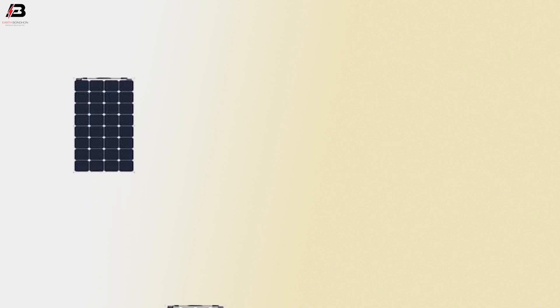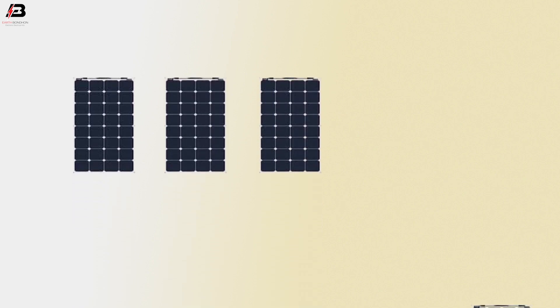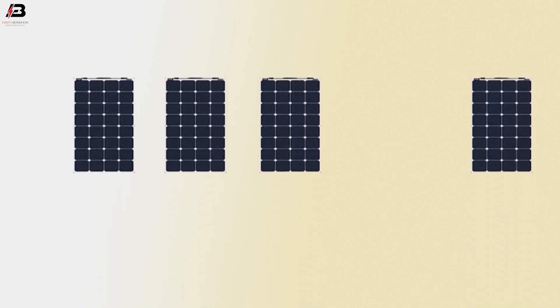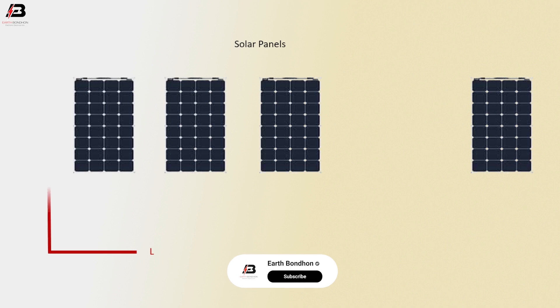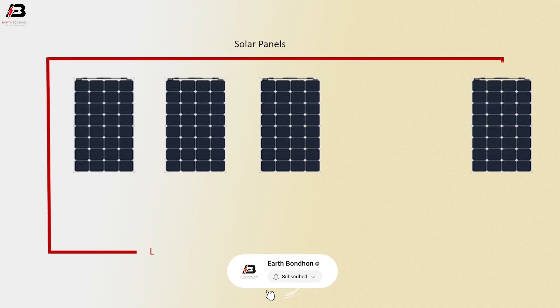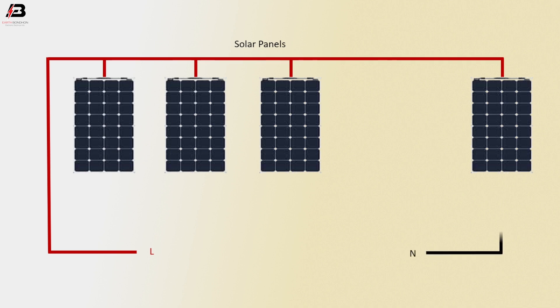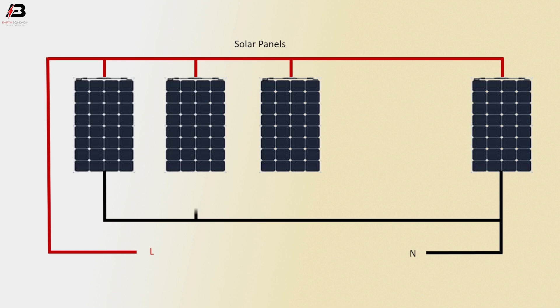If you already subscribed, thank you so much. So viewers, let's start. Solar panels one, two, three, and four — positive connection to all solar panels one, two, three, and four. Negative connection to solar panels four, one, two, and three. Now this is ready for use.